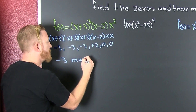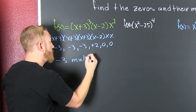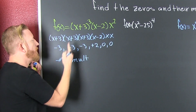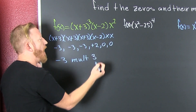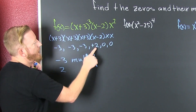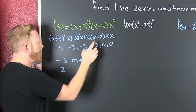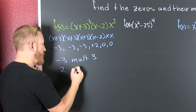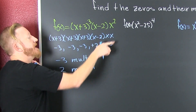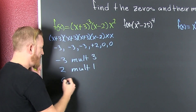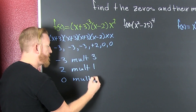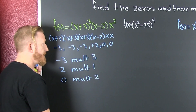Minus 3 — multiplicity, how many times does it occur? One, two, three. And then positive 2: how many times does it occur? One time, so it's multiplicity 1. And zero is a zero of multiplicity 2.